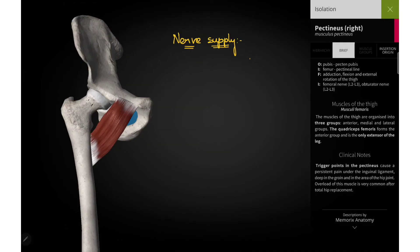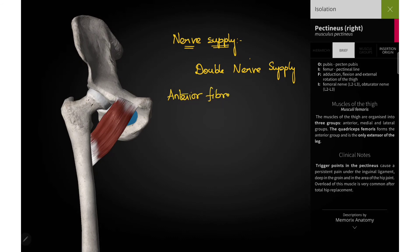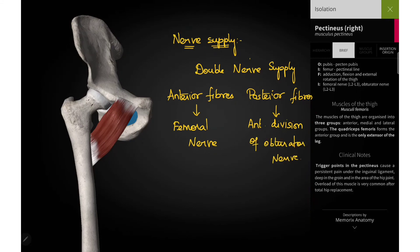Now coming to the nerve supply. All the muscles of the medial compartment of the thigh — the adductor compartment — are supplied mostly by the obturator nerve. But this muscle is an exception in that it has a double nerve supply. The anterior fibers of the pectineus muscle are supplied by the femoral nerve, and the posterior fibers are supplied by the anterior division of the obturator nerve. The obturator nerve arises from the lumbar plexus, and you can check the description box for the link to the femoral nerve video.